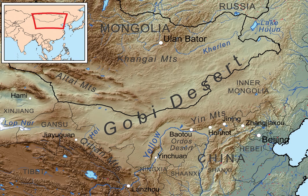The Gobi extends from the foothills of the Altai, Sion, and Yablanoi mountain ranges on the north to the Kunlun, Alton Ta, and Kilian mountain ranges, which form the northern edges of the Tibetan Plateau on the south. A relatively large area on the east side of the Greater Kingan Range, between the upper waters of the Songhua and the upper waters of the Liao Hou, is reckoned to belong to the Gobi by conventional usage.